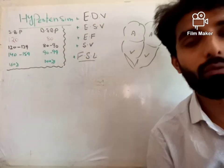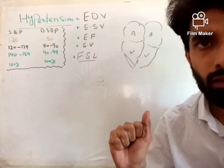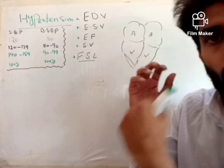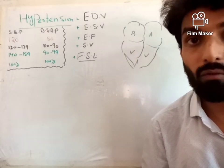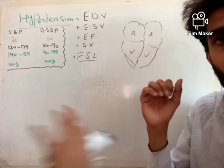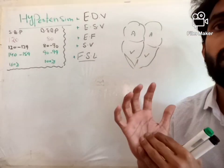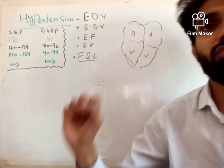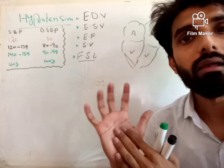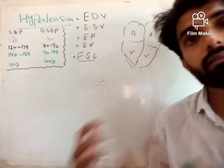End systolic volume. When the heart contracts, most of the blood — not all — most of the blood from the ventricle goes into the blood vessels. The remaining blood at the end of contraction, at the end of systole, the blood that remains in the heart ventricle is called end systolic volume.